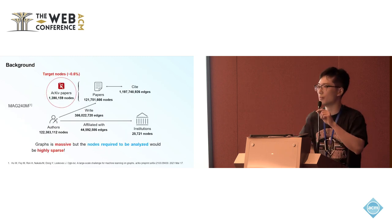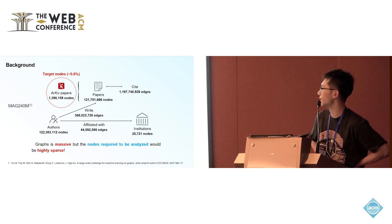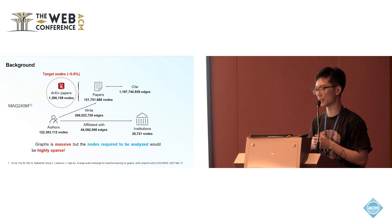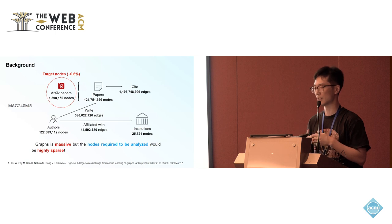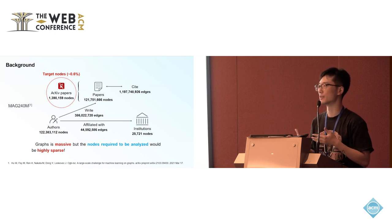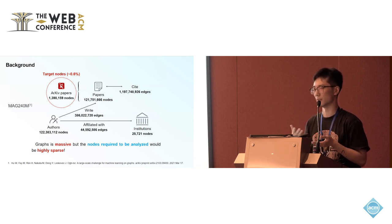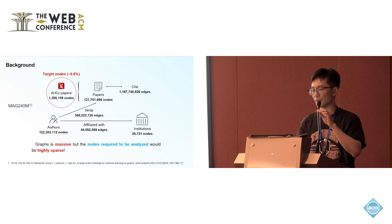Based on previous studies, we found that in many real-world applications graph data can be very massive. However, we also found that the nodes actually required to be analyzed are very sparse. For example, in one dataset there are only about one million nodes required to be classified. So the graph is massive but the nodes required to be analyzed are highly sparse.